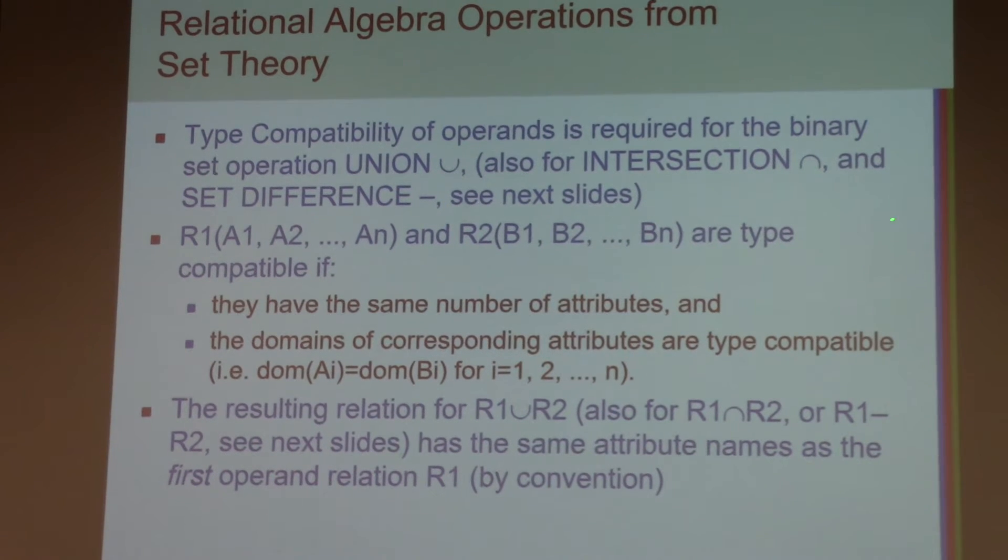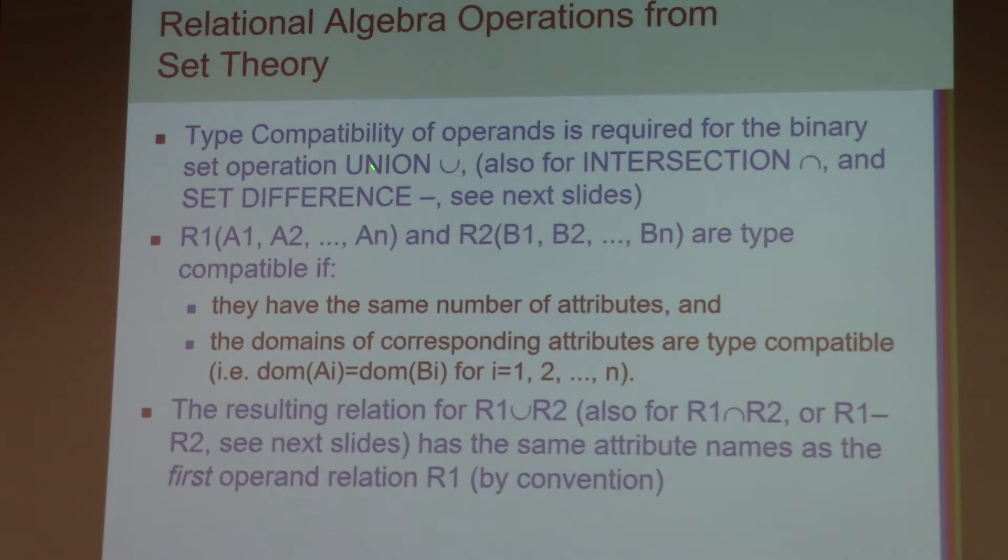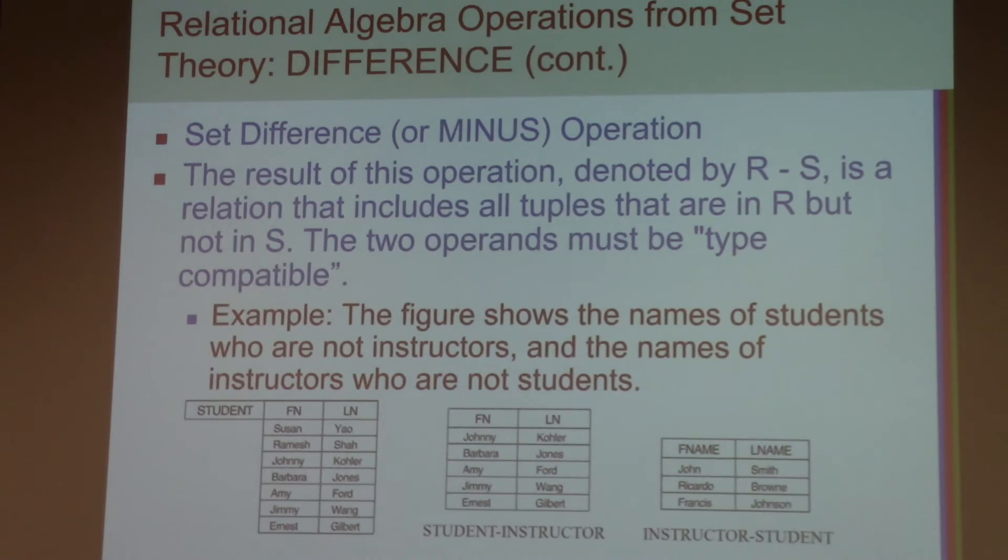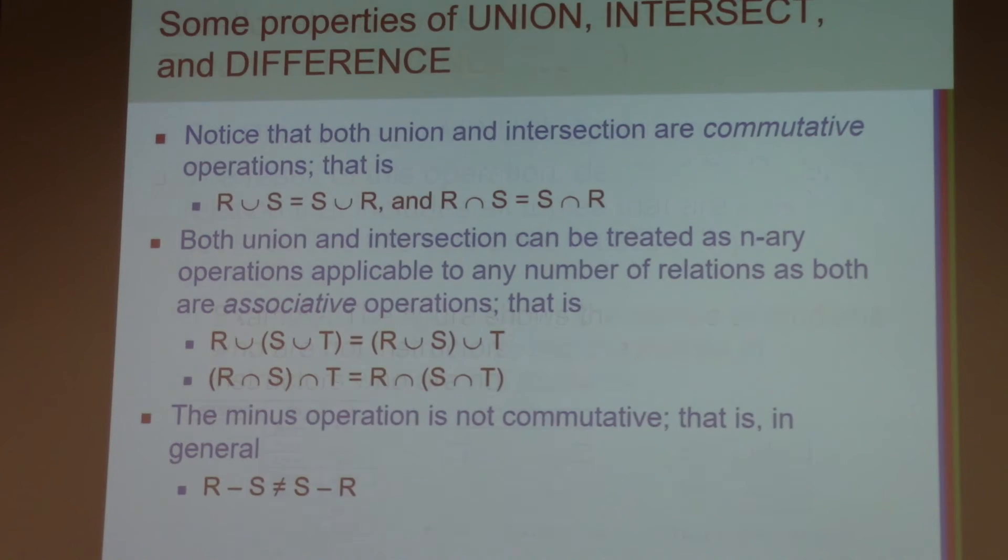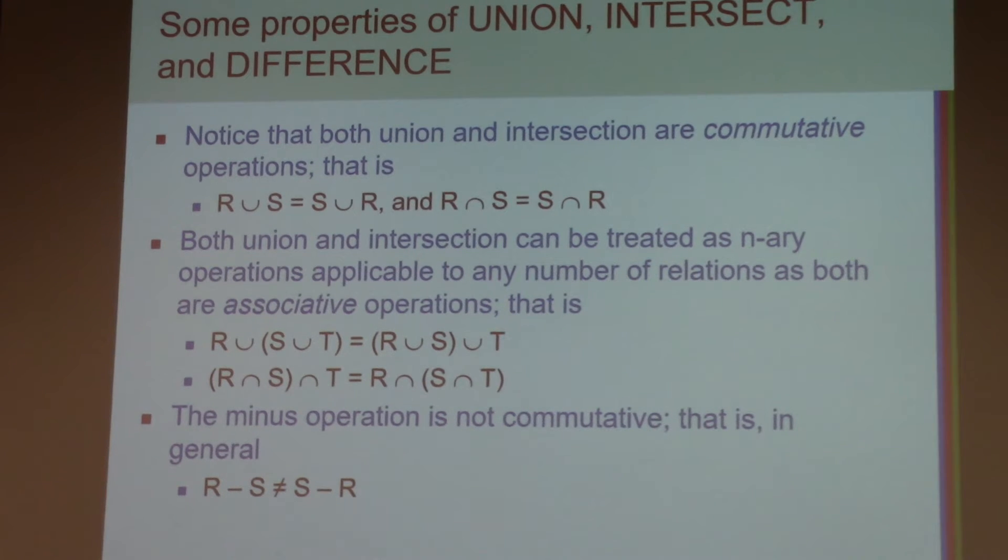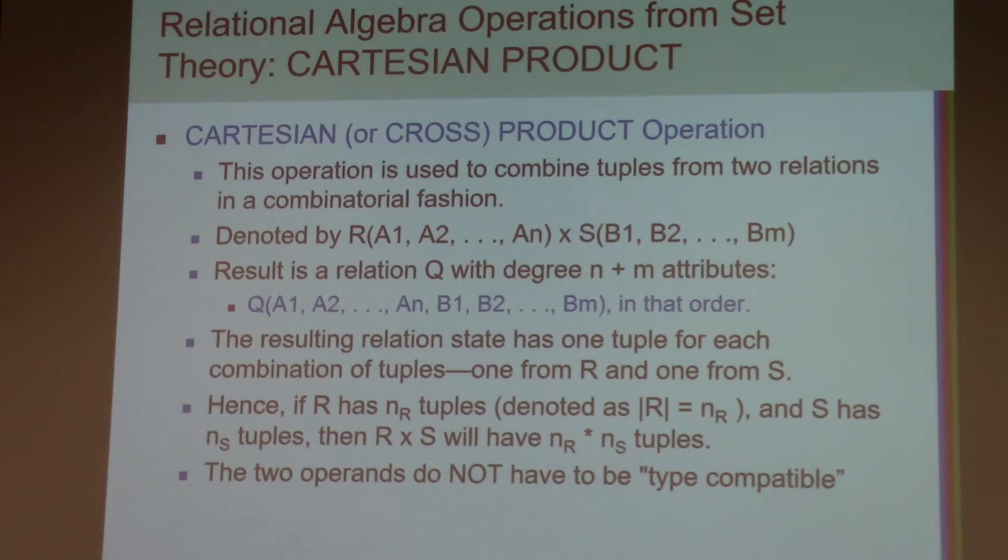So from the set theory, we can use it. So so far, we have seen the union, intersection, and the difference. Difference, I don't have to explain that. Minus. So you will probably learn that this kind of set operation characteristic commutative and associative. But this is not true. This is a very popular question in your elementary school, right? Same thing. And one more, last thing.